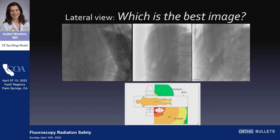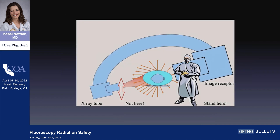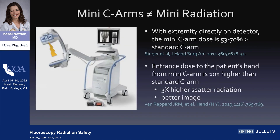People think, oh goodness, you have the source pointing right at you — but that's not how it goes because the patient eclipses most of the photons. I always get questions about mini-C arms. Mini-C arms are not mini-radiation. If you look at the similar geometry, mini-C arms provide better images, but it's at the cost of more radiation and more scatter.